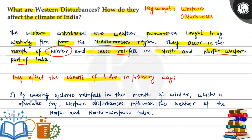They affect the climate of India in the following ways. First, by causing cyclonic rainfall in the months of winter, which is otherwise dry. Western disturbances influence the weather of north and north-western India — westerly winds cause cyclonic rainfall in the months of winter, which is otherwise dry.